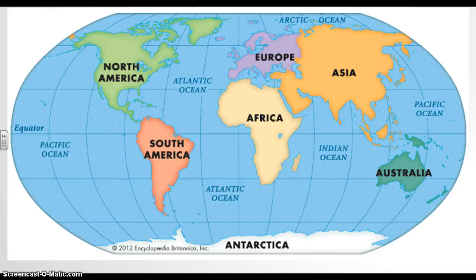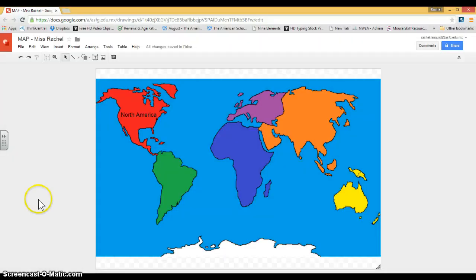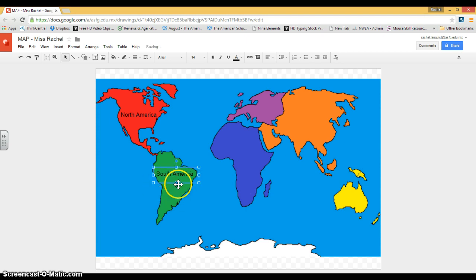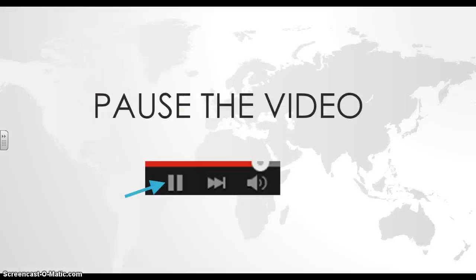The next continent we're going to look at is South America. We are going to do the same — we're going to spell it exactly correct, and we're going to put it right on top of South America. I'm going to go to the top, I'm going to click my T for text box, and then I'm going to click on top of South America. I'm going to do capital S, South, space, capital A, America. It's going out into the ocean, so I'm going to make my cross and pull it so it is on top of the continent. Go ahead and pause the video so that you can type South America on top of the continent.